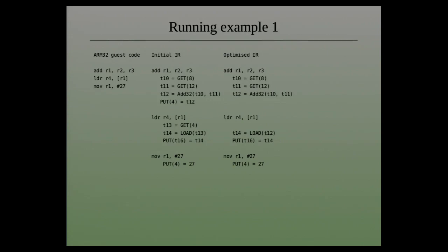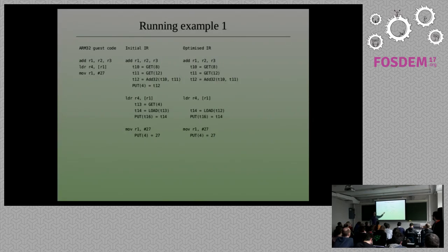We're going to fetch the register state — these numbers are offsets in the guest state struct from the previous slide. This is completely arbitrary offsets, but it has to be connected to the structure. Then we're going to add them together, producing another temporary, and then park the result back in the slot for the destination register R1. Load is very similar: we fetch R1 again, do the load, and put the result back in R4's slot. Finally, we override R1 with the literal 27.